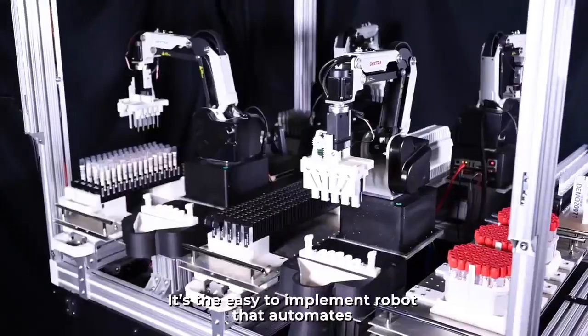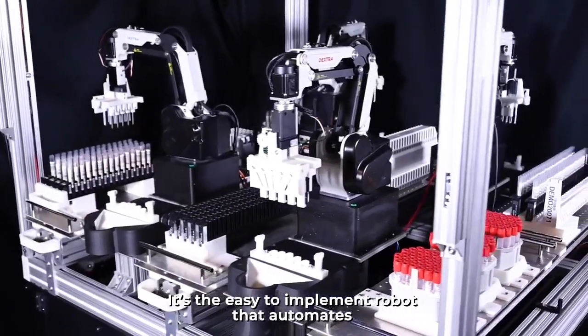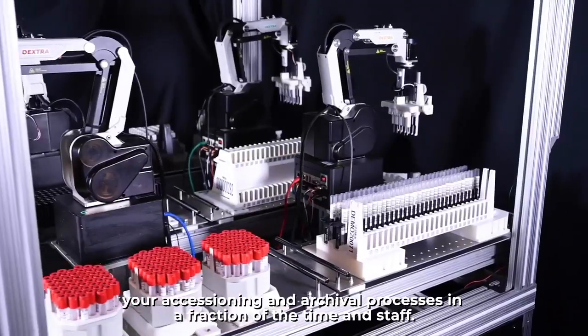This is the Eidetic Dextra. It's the easy-to-implement robot that automates your accessioning and archival processes in a fraction of the time and staff.